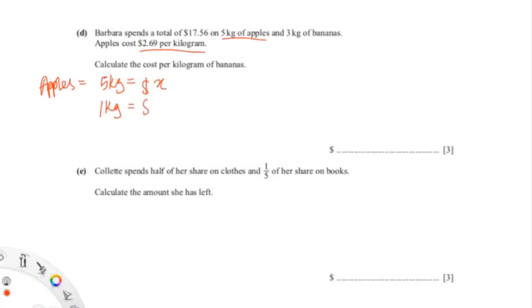and 1 kg equals $2.69. You do cross multiplication, and you will get x equals 5 times 2.69, which gives you a value of $13.45. And because the total is $17.56, so 17.56 minus 13.45 gives you a value of $4.11.